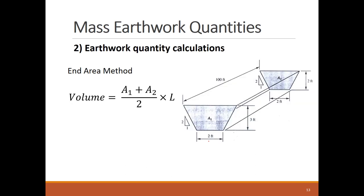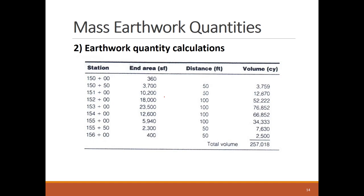After the end areas are calculated for all roadway segments, the volume of each segment equals the average of its end areas, A1 and A2, times the length of segment L. The L value is very dependent on the geometry of the project, so it's determined based on the estimator's judgment. The shown figure is an example of how the end area calculations are used to calculate the earthwork volumes.